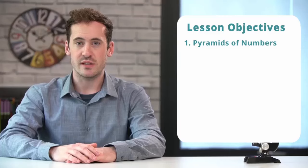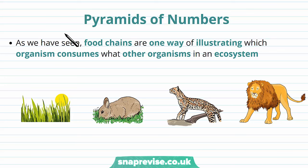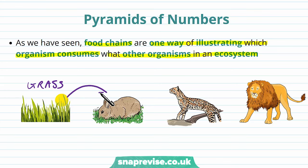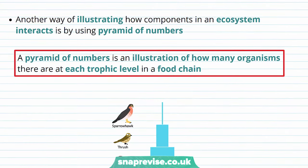In this video we'll be looking at pyramids of numbers, biomass, and energy, and then we'll finish with a summary. As we've seen before, food chains are one way of illustrating which organism consumes which other organisms in an ecosystem — for example, grass as a producer gets consumed by the rabbit, which gets consumed by wild cats, which can be consumed by lions. Another way of illustrating how components in an ecosystem interact is by using a pyramid of numbers, which shows how many organisms there are at each trophic level in a food chain.